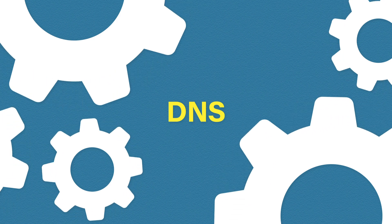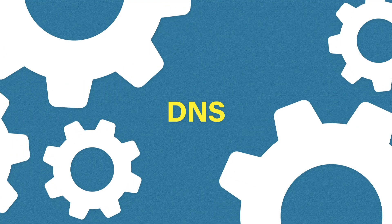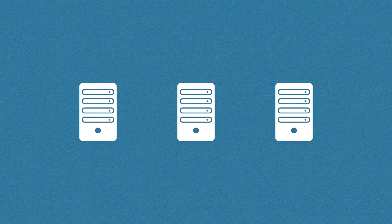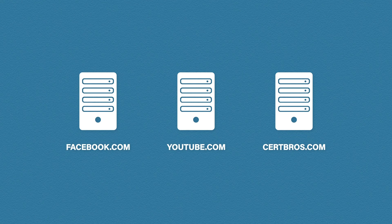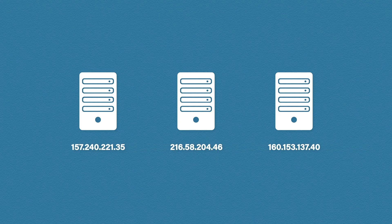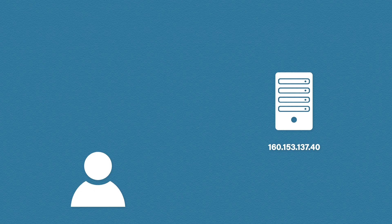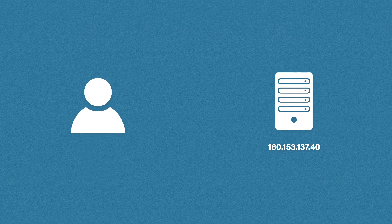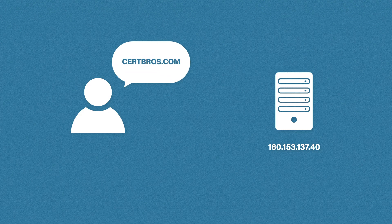Without DNS our connected lives would look very different. The world is full of web servers — almost 2 billion websites exist today, such as facebook.com, youtube.com, and of course certbros.com. The problem is web servers don't use names like certbros.com; they actually use IP addresses. Being the small-minded humans that we are, we can't process large amounts of IP addresses very easily. Humans are much better at using domain names such as certbros.com.